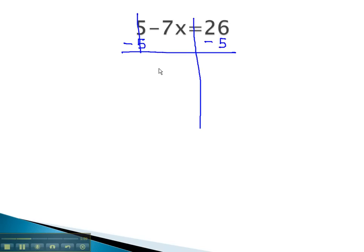Now, our 5 subtract out to 0, and all that remains on the left side is negative 7x equals 21. Remember that because there's nothing between the negative 7 and the x, that implies the operation is multiplication.